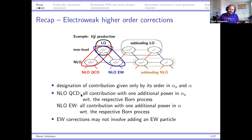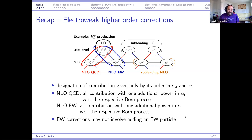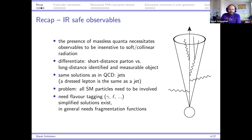At NLO QCD, I take into account all contributions that add one additional power of alpha_s with respect to the respective Born process. For next-to-leading order electroweak corrections, this would be all contributions with an additional power of alpha. In particular, there are electroweak contributions that may not involve adding any electroweak particle whatsoever, but rather adding an additional gluon with respect to a different leading order process.